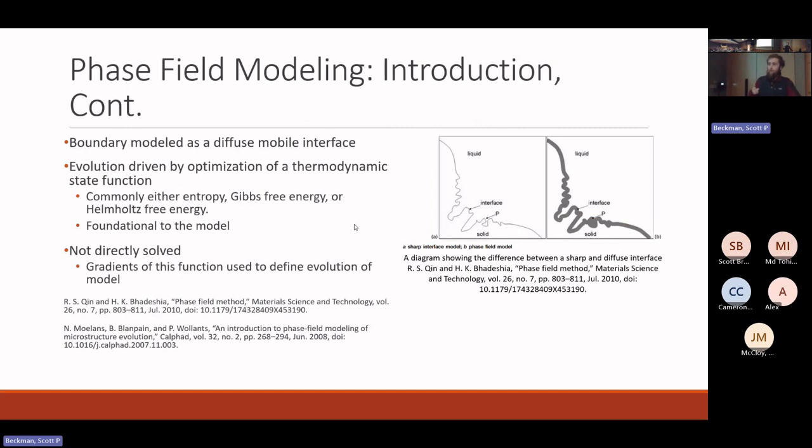As I mentioned before, the boundary between domains is characterized by a gradient in the order parameter ranging from zero to one, and this results in a diffuse interface that moves as the model progresses. We've got a little diagram on the right from a piece of literature introducing the phase field model. This is simply a diagram showing the difference between a solid and liquid interface, which is not exactly what we're looking at, but the gradient structure of the interface is consistent across all phase field modeling.